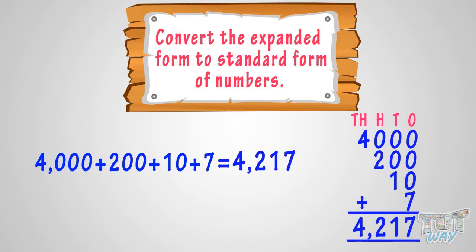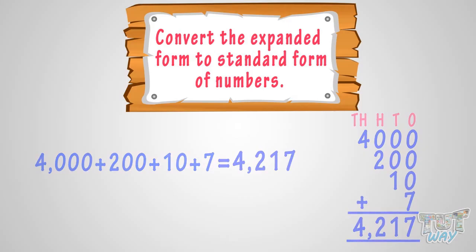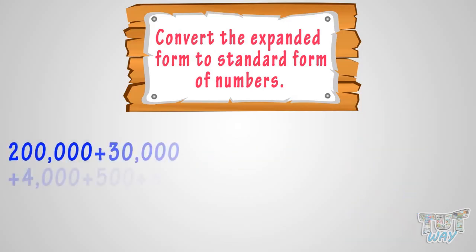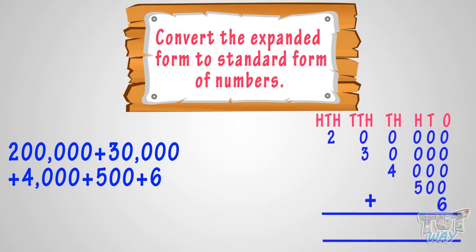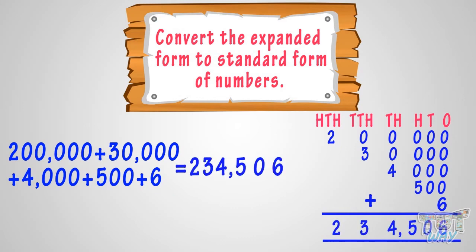Let's take another example. Here we have another number in expanded form. Let's convert it to its standard form. We add up all the numbers given in expanded form. Adding all the numbers, we get two hundred and thirty-four thousand, five hundred and six. This is the standard form for this expanded form.